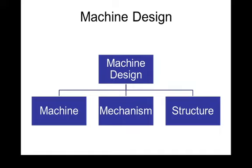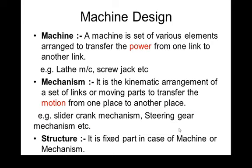Machine design is classified into three categories: machine, mechanism, and structure. Let us see what each of these means.